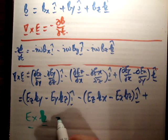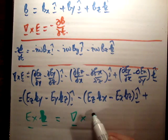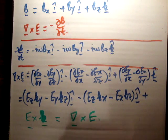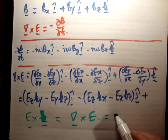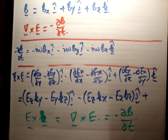So E cross k equals ∇×E, and that equals negative ∂B/∂t — they're all the same.